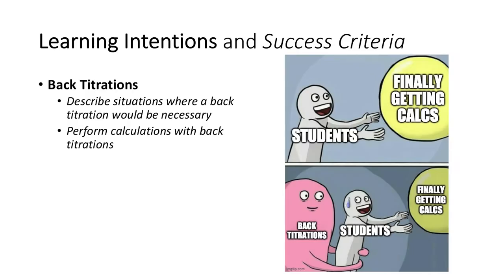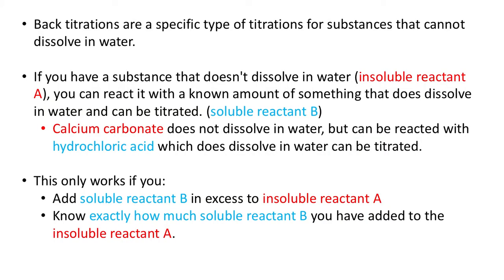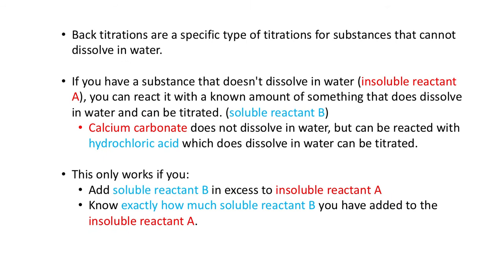Back titrations are a specific type of titrations for substances that cannot dissolve in water. If you have a substance that doesn't dissolve in water — which we're going to call the insoluble reactant A — you can react it with a known amount of something that does dissolve in water and can be titrated, which we'll call soluble reactant B. Because volumetric analysis requires stuff to be dissolved in solution, if you have something that can't dissolve, you react it with something that is dissolvable and then titrate that.